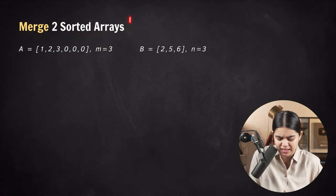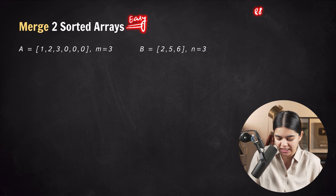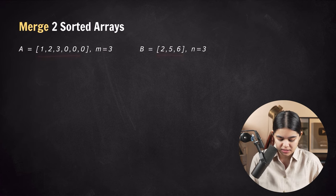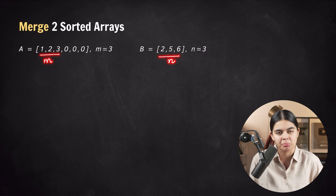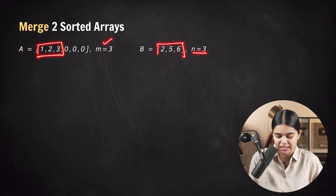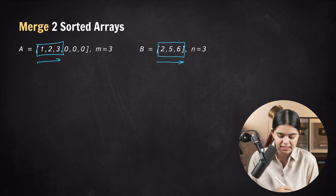This is an easy level question and it's problem number 88 on LeetCode. We have two arrays given. In the first array we have m number of elements and in the second array we have n number of elements. m equal to 3 means there are three valid elements in the first array, and n equal to 3 means three valid elements in the second array. These elements are arranged in sorted, increasing order.